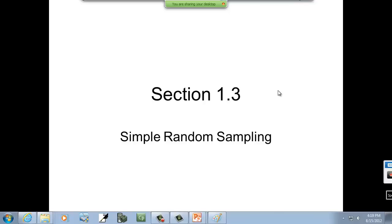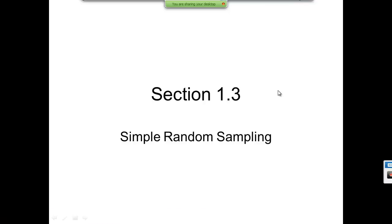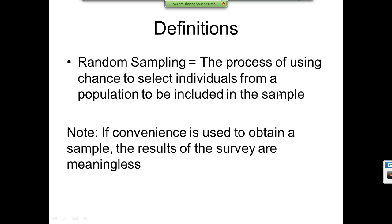This is simple random sampling. Random sampling is a process using chance to select individuals from the population to be included in the sample. Note: if convenience is used to obtain a sample, the results of the survey are meaningless.